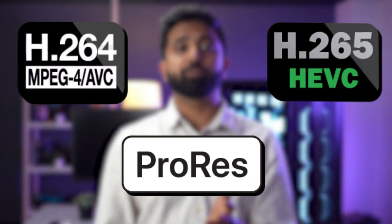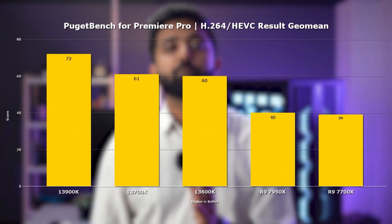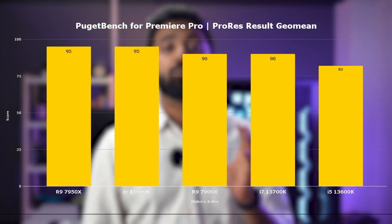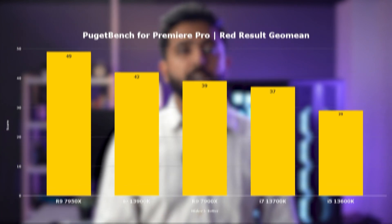Starting off with the CPU, this is mainly depending on the file format you use. If you mostly work with the classic H.264, HEVC, or ProRes, you will need a good balance between core count and clock speed. While more intense workloads like RED cameras mostly depend on your core count.